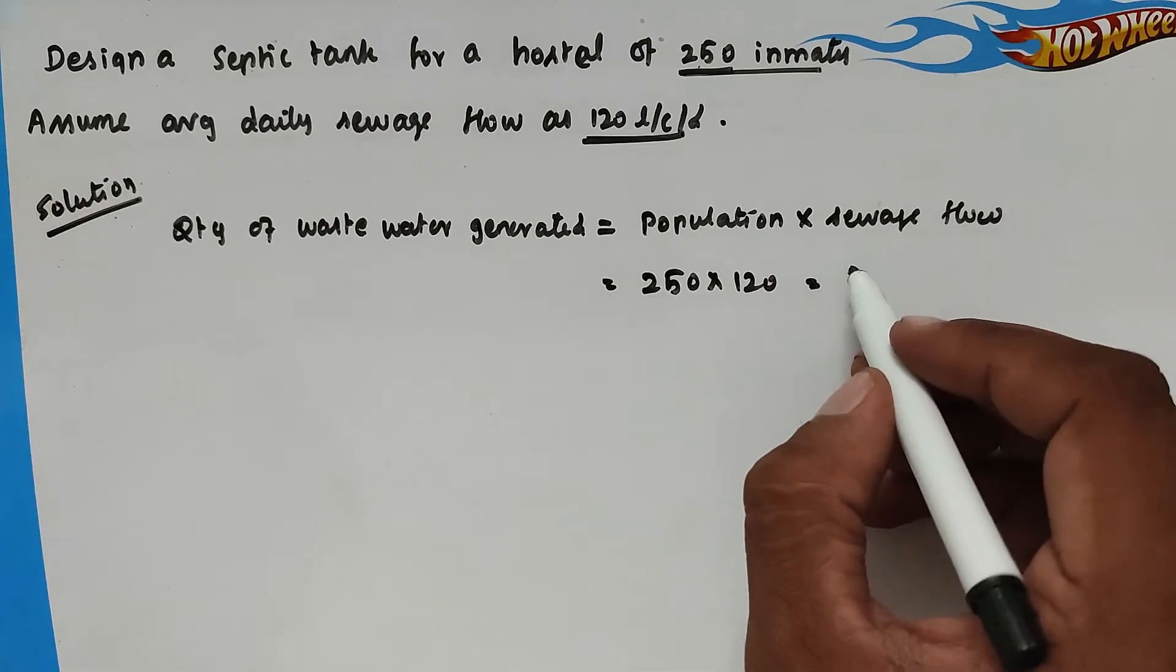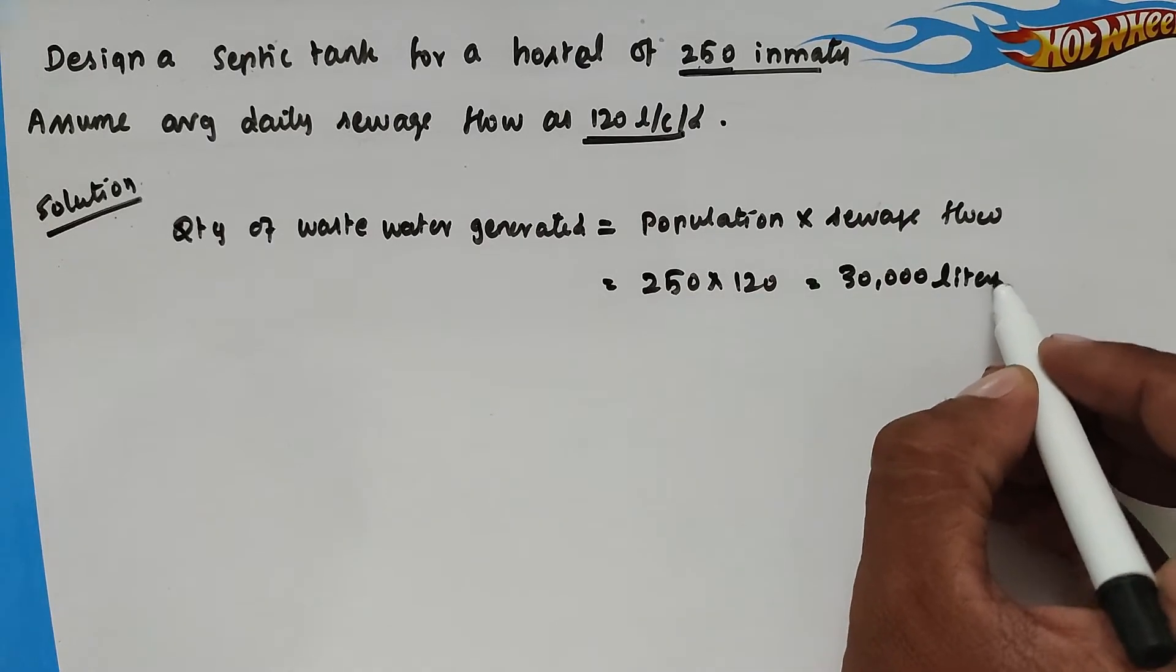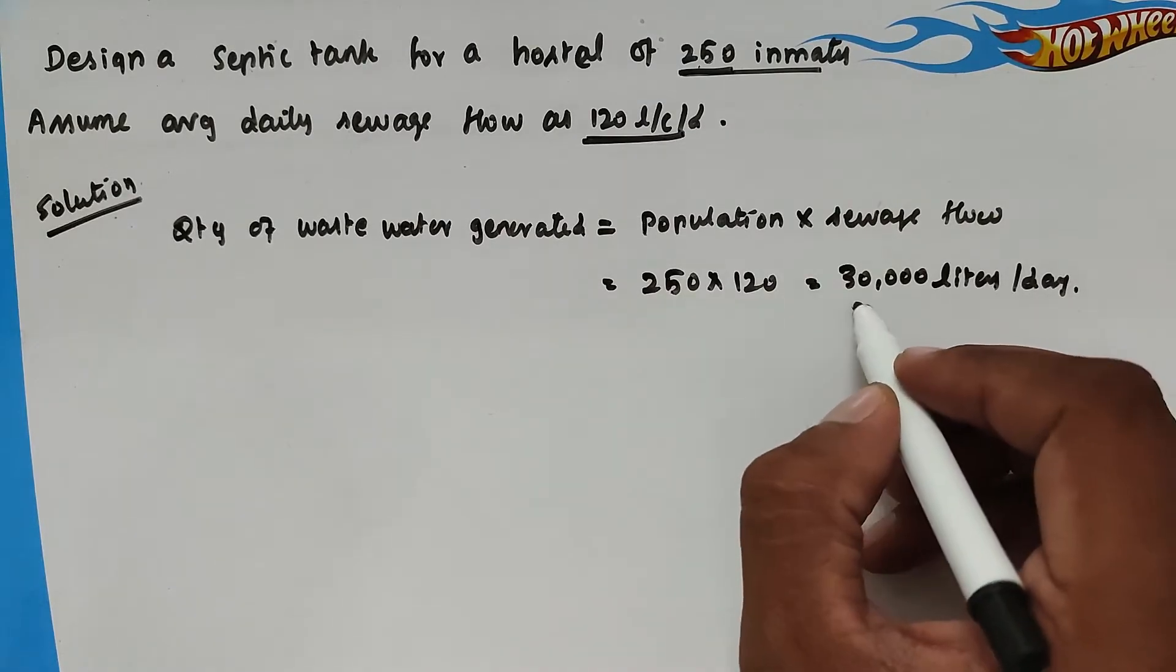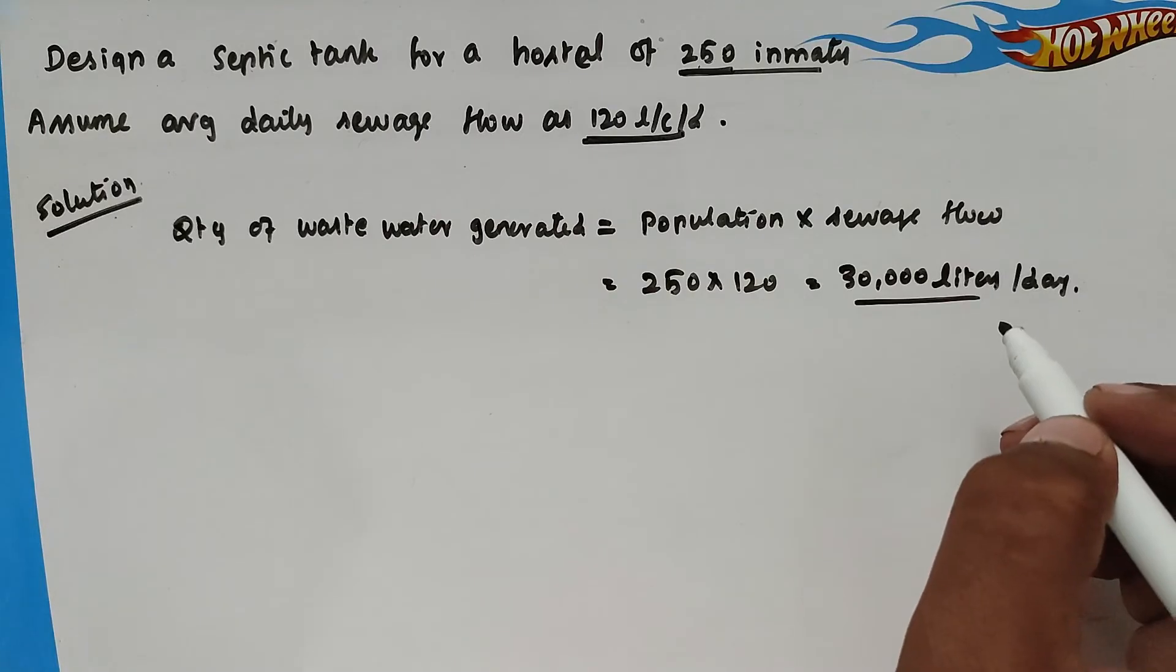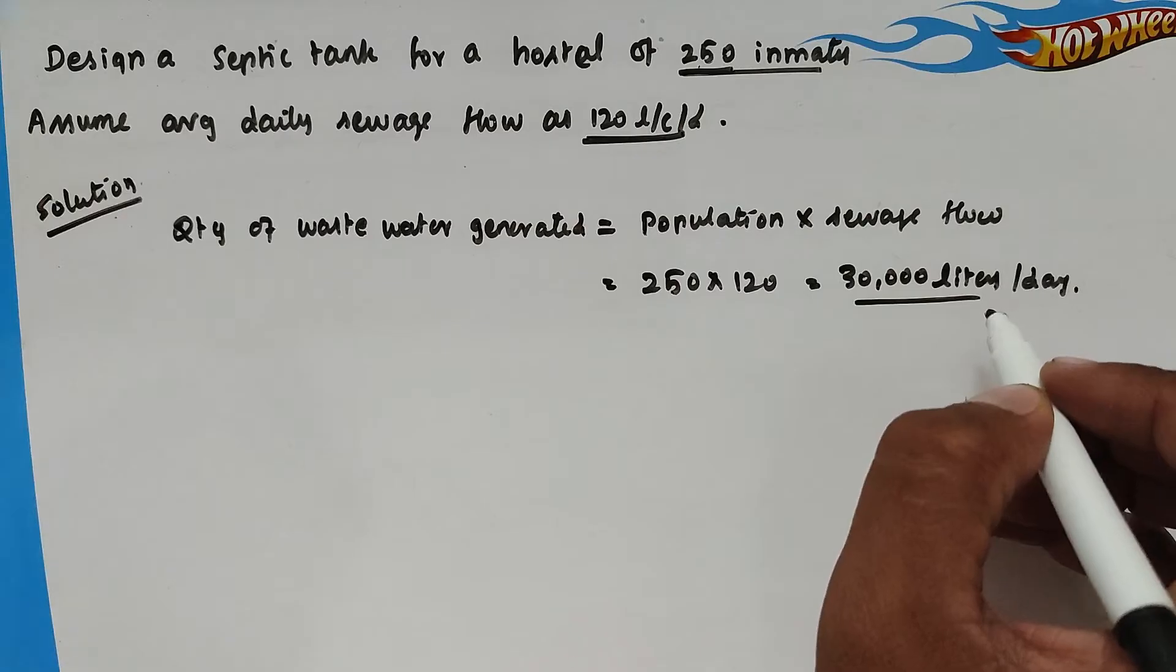Solving this we got the value of 30,000 liters per day. So per day 30,000 liters of sewage will be generated. So we have to design a septic tank for this volume.